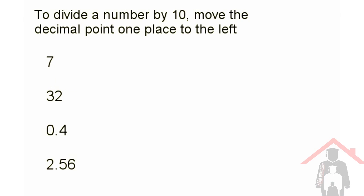In these questions, I want to divide by 10. When we divide by 10, we want the number to get smaller, so we're going to move the decimal point one place to the left. The decimal point is here for this question, and I'm going to move it one place to the left. That means that it's now here, so I have 0.7. We're not allowed to leave our answer like this, because the point might look just like a speck on your paper, so you need to make sure you put a zero in front of it.